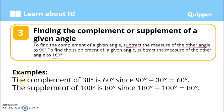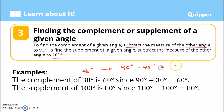Examples. The complement of 30 degrees is 60 degrees, because 90 degrees minus 30 degrees equals 60 degrees. So what is the complement of 45 degrees? To solve that, it would be 90 degrees minus 45 degrees, which equals 45 degrees. Let's check: 45 degrees plus 45 degrees equals 90 degrees. So they are complementary.